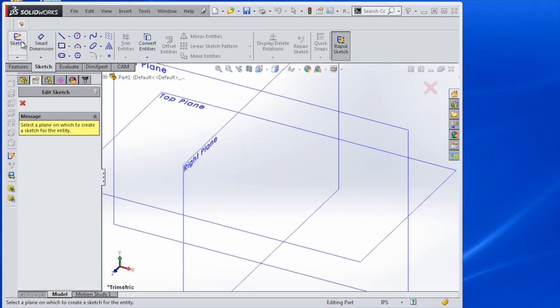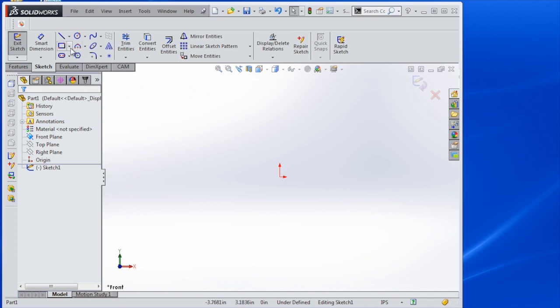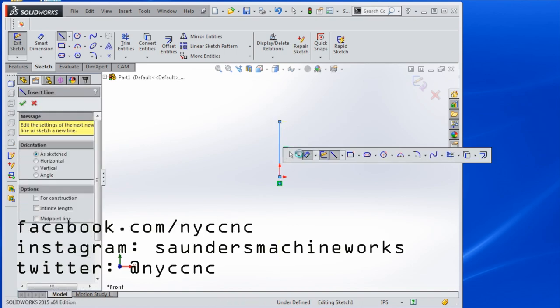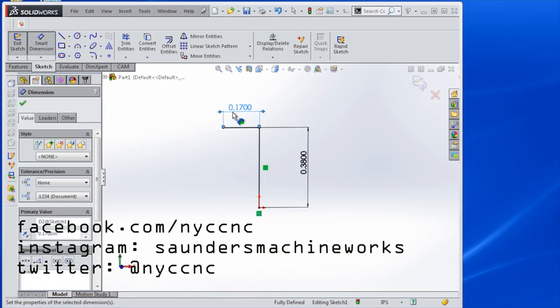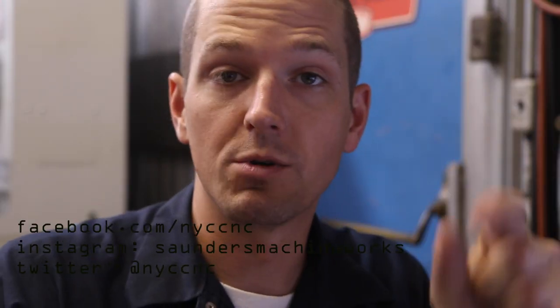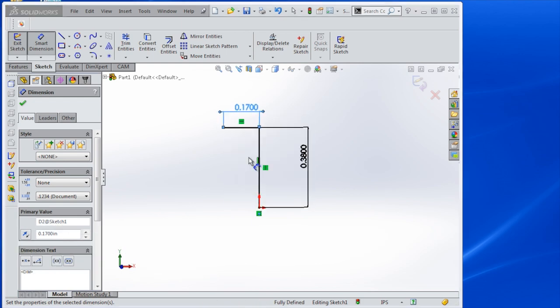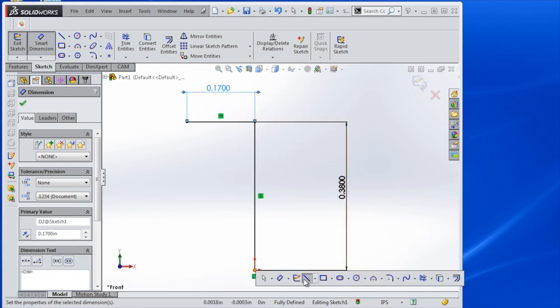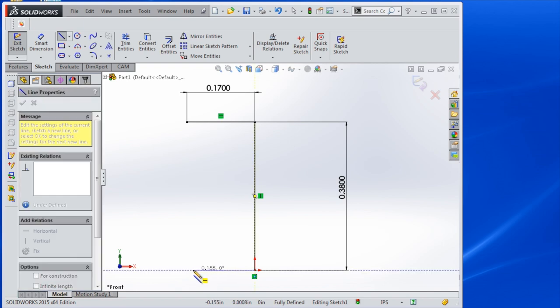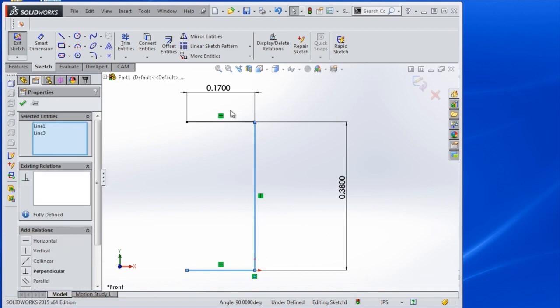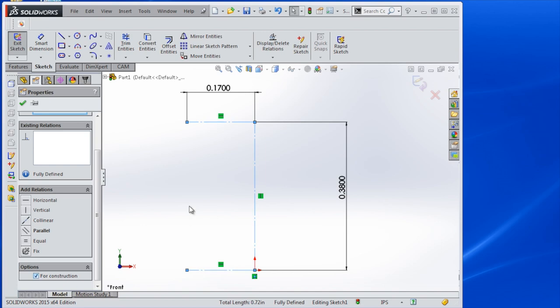So new part in SOLIDWORKS, sketch on the front plane and what we're going to do is first create a line that's the height of the part, so 0.38 inches. Then we're going to create the center hole, which we know is 0.34, so I'm going to do half the part and then we're going to revolve it. So 0.17 over, make sure we're square on it. Same thing down here. And now, all these are going to actually be construction geometry, so click them all for construction.